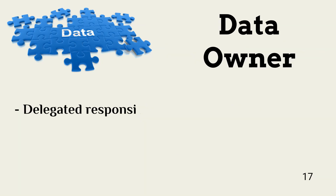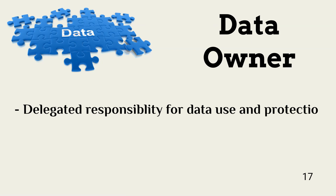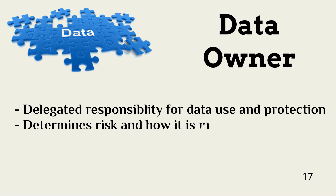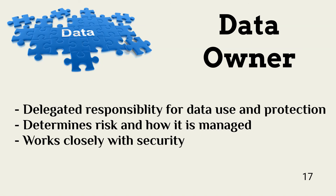One concept not specifically covered in this section of Domain 2 is data owner. The data owner is ultimately the CEO and the board of an organization; however, data ownership is usually delegated. For example, the data owner of financial information might be the VP of Finance, and the data owner of employee data is the VP of HR. Data owners are responsible for assessing risk associated with the data and related systems, and security works with the data owners to manage risk and needed safeguards.